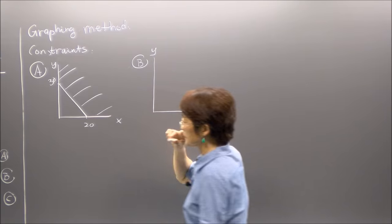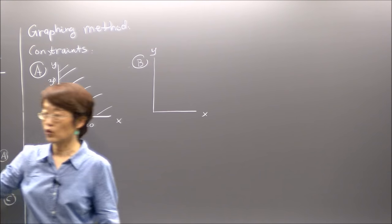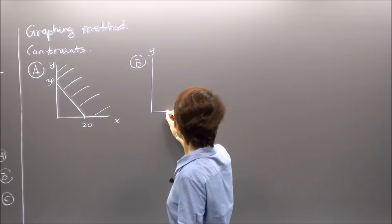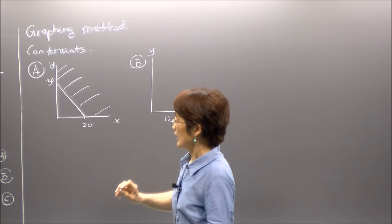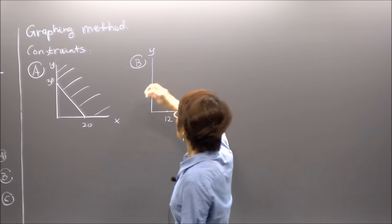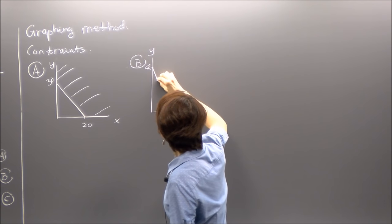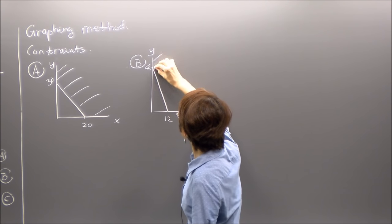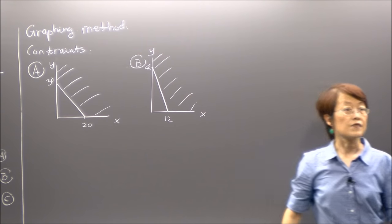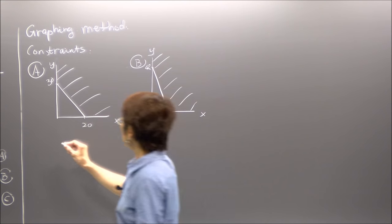For constraint B, the x-intercept is 84/7, which is 12, and the y-intercept is 84/2, which is 42. I connect these and draw a straight line, and the region above satisfies constraint B.